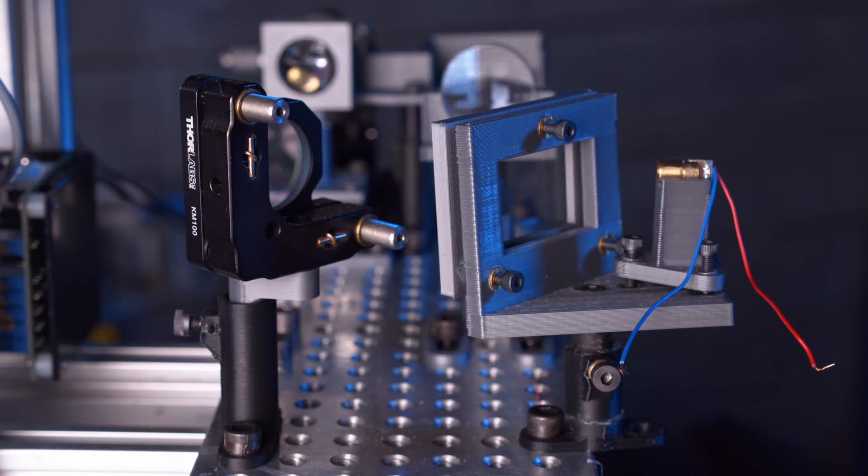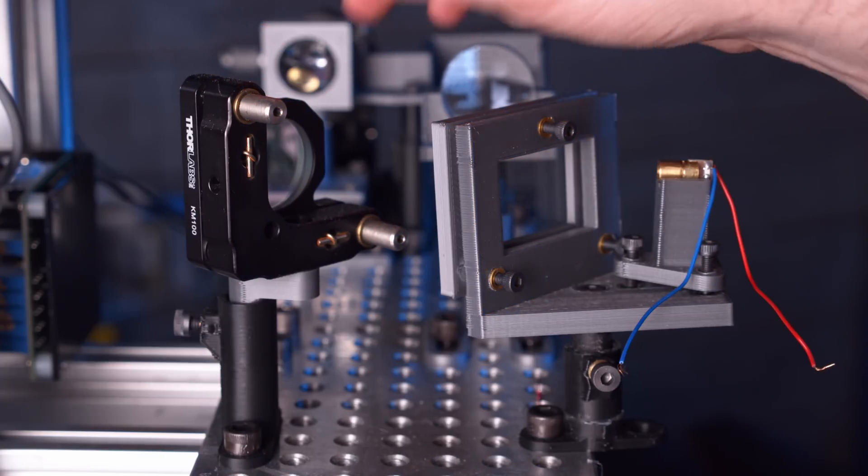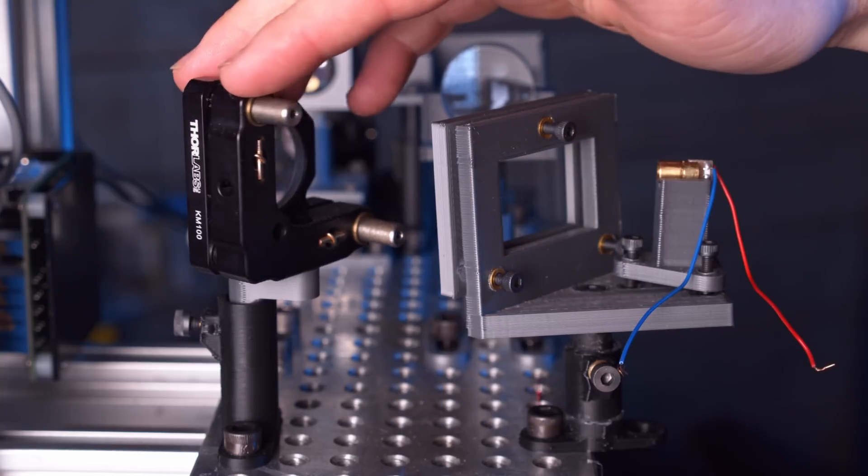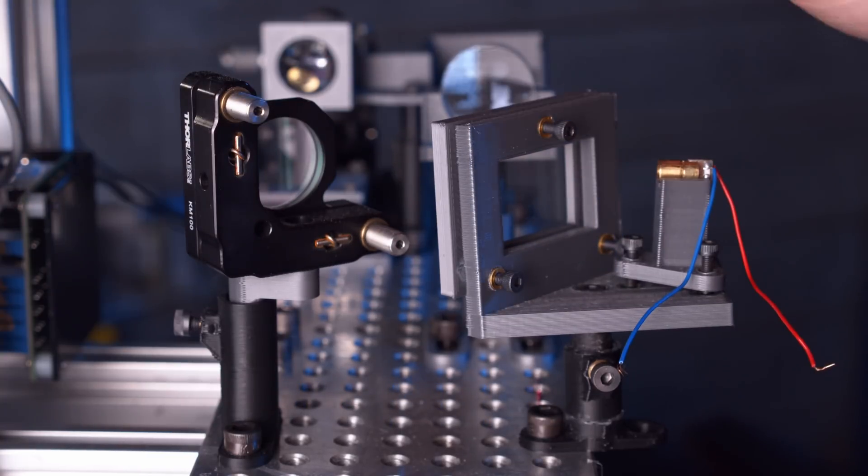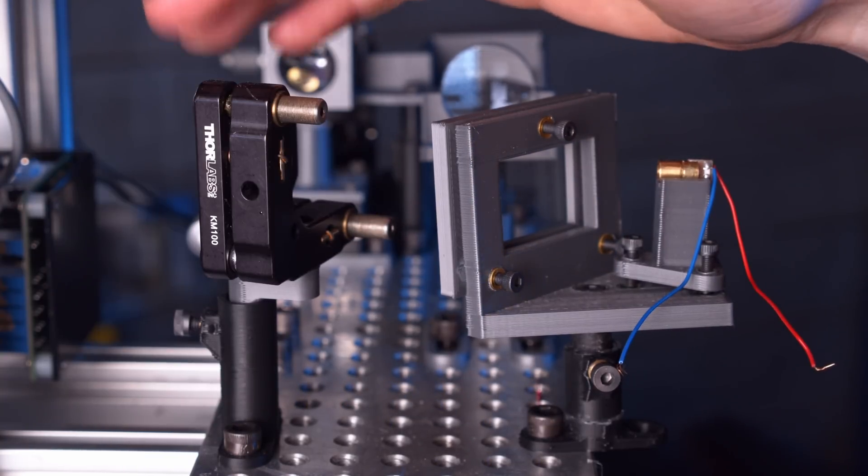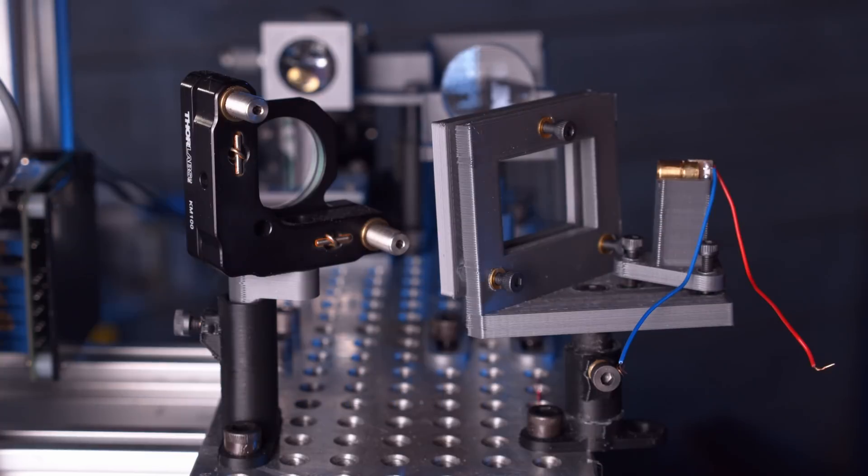Let's start by talking about kinematic mounts. So there are two mounts here that you can see. This one is obviously the commercial product from Thor Labs, made out of metal, has nice everything, good finish, adjusts easily, really pleasant to work with. And then we have the 3D printed version.